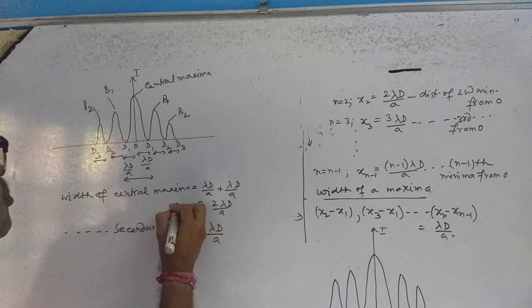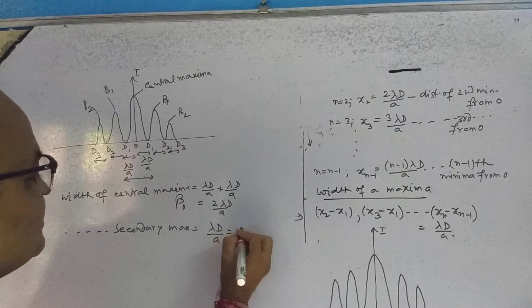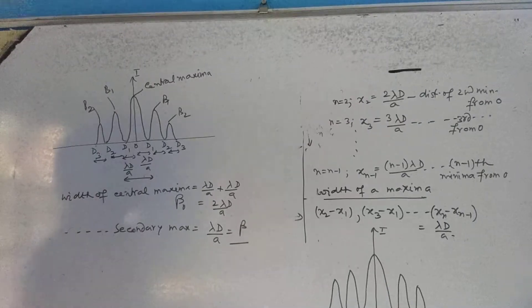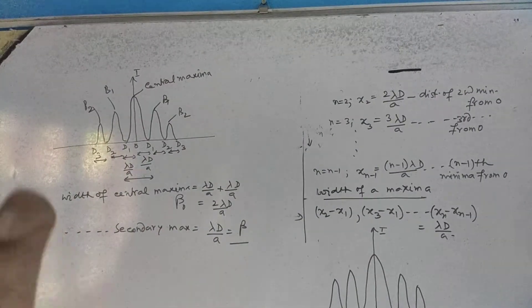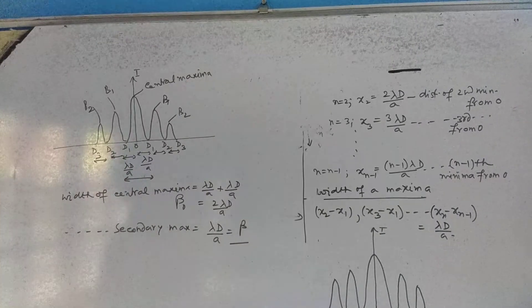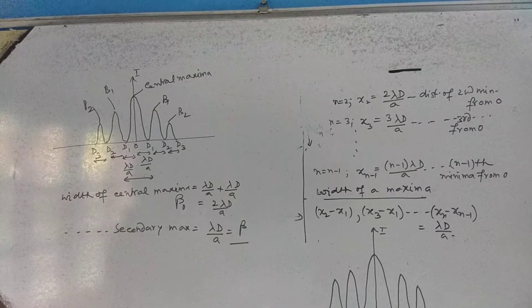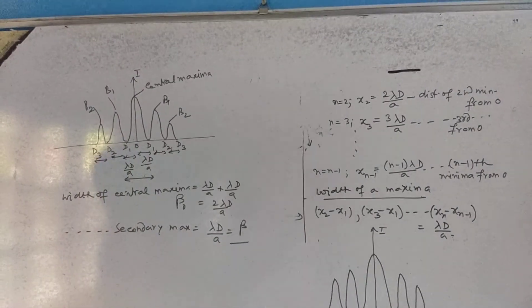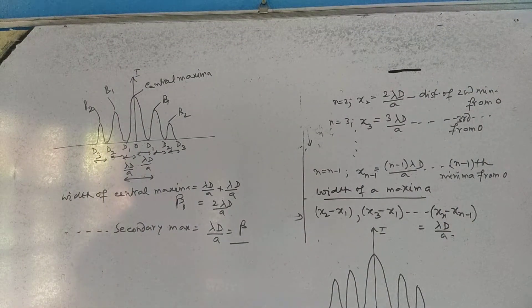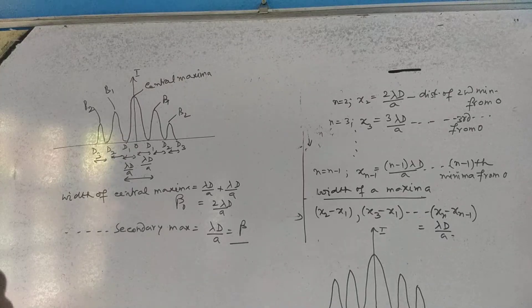This is why we say width of the central maxima is double the width of the secondary maxima. This is the difference. If we say fringe width, the central maxima width is double. This is how double.